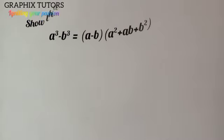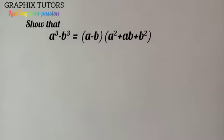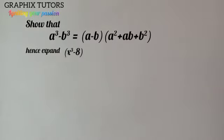Good everyone, my name is Graphics. Today we want to study an aspect of elementary algebra where we are told to show that a cube minus b cube equals a minus b in brackets, multiplied by a square plus ab plus b square in another bracket. Hence expand s cube minus 8.